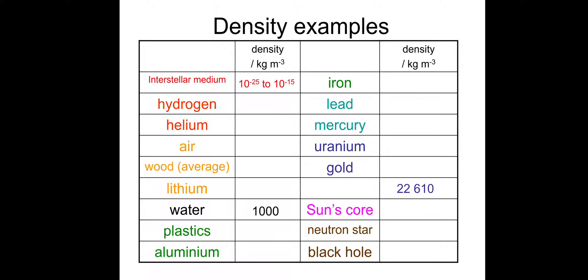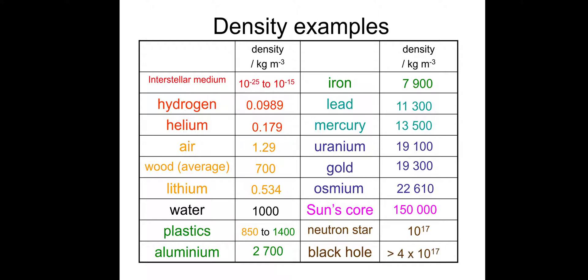Just some examples. Interstellar medium, so space, 10 to the minus 25 to 10 to the minus 15. Air, 1.29 kilograms per cubic metre. Water, 1,000 kilograms per cubic metre, we should know that one. Plastics vary between 850 to 1400. And then we keep getting heavier. Well, more dense. Uranium, 19,100. Gold, 19,300. That's osmium. Sun's core, 150,000 kilograms per cubic metre. Neutron star, 10 to the power of 17. And black hole, we're looking greater than 4 times 10 to the 17 kilograms per cubic metre.